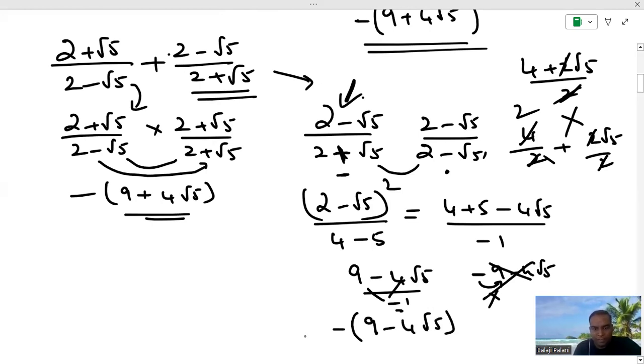So, minus 9 minus 4 root 5. One bracket minus 1, one bracket. It becomes 9 minus 4 root 5. Now, you can take this minus inside. It becomes minus 9 plus 4 root 5. Hope you all understand this. Minus is applied to 9, minus into plus minus, minus into minus plus. So, you get minus 9 plus 4 root 5. In here, minus 1, one bracket, it becomes minus 9 minus 4 root 5. So, now, I think you will be able to get this.